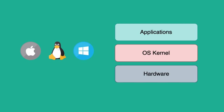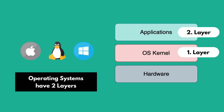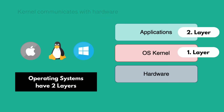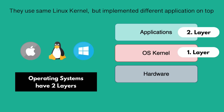To understand how Docker works on the OS level, let's look at how an operating system is made up. Operating systems have two layers: the OS kernel and the applications layer. The kernel is the part that communicates with hardware components like CPU and memory, and applications run on the kernel layer. For example, Linux has many distributions — Ubuntu, Debian, Linux Mint, and hundreds more. They all look different, with different GUIs and file systems, because even though they use the same Linux kernel, they implement different applications on top of it.